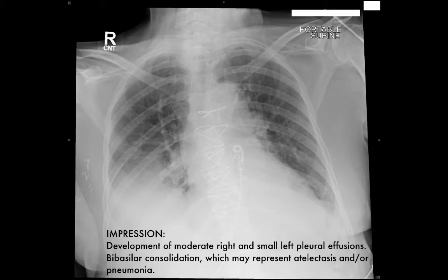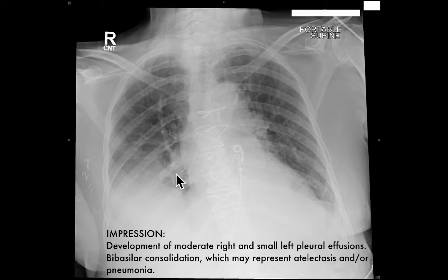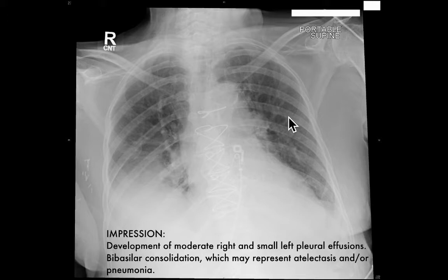This is the chest x-ray that was seen on the initial slide. We can see prior sternotomy, possibly some cardiomegaly, but mostly we see there's a loss of the diaphragm here. They keyed in on this and called it development of moderate right pleural effusion and a small left pleural effusion, with basilar consolidation possibly representing atelectasis and/or pneumonia.